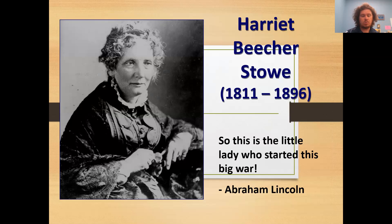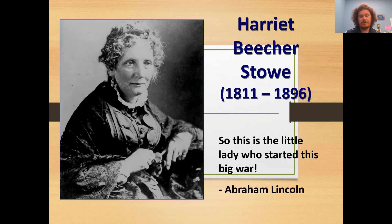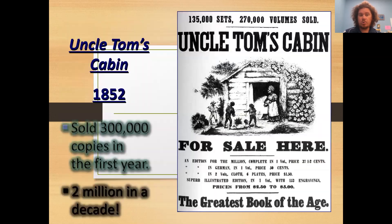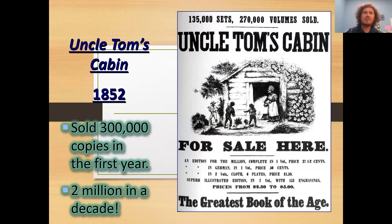Moving on, we have Harriet Beecher Stowe, a woman who wrote a book called Uncle Tom's Cabin. It's a very famous book in US history — a work of fiction, not a true story, but a very anti-slavery book. The book is about a family of slaves and the horrible things that happened to them. Long story short, everyone dies — spoiler alert, sorry, it's like 150 years old. The book was a bestseller in the North. People viewed it as an example of all the evils of slavery. The book was banned from sale in the South. So we see the North and the South reacting to things very differently, and the division growing.